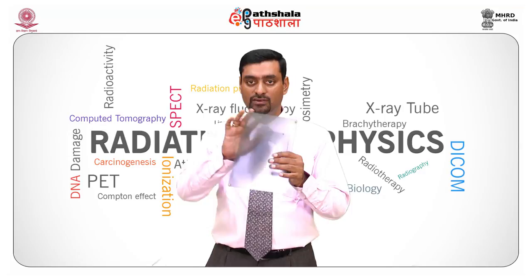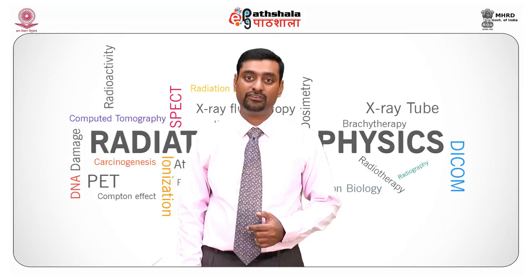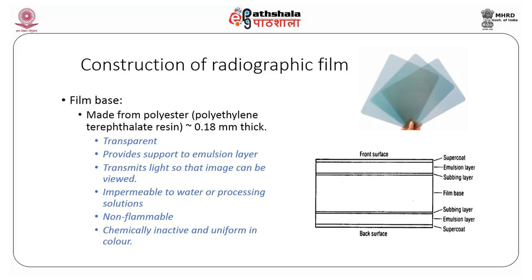Let us get into detail about the construction of a radiographic film. The film base is made out of polyester which is approximately 0.18 millimeters in thickness. The film base should be transparent, provide support to the emulsion layer, transmit light so that the image can be viewed, be impermeable to water or processing solution, non-flammable, chemically inactive, and uniform in color.